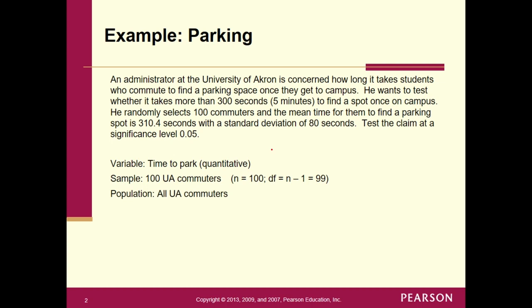That means our population is all UA commuters. Makes sense. So our sample mean turned out to be the 310.4. It says, randomly selects 100 commuters and the mean time for them to find a parking spot is that number right there. That's x bar. Sample standard deviation is right after that with a standard deviation of 80 seconds. So that's s. And alpha was set to 0.05.